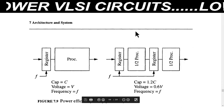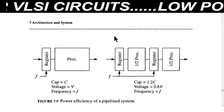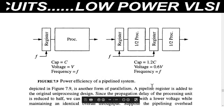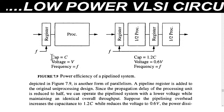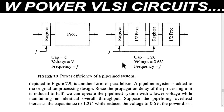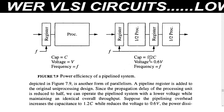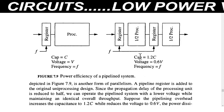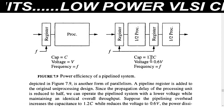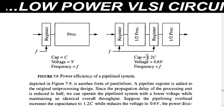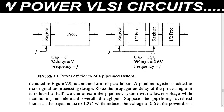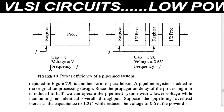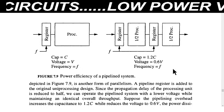By using this pipelining structure we can do parallel processing and the power dissipation will be reduced because the supply voltage is also reduced. Before using pipelining, if the capacitance is C, voltage is V, and frequency is f, then after using pipelining the capacitance will be 1.2C — only 20 percent greater than the previous capacitance. The supply voltage is reduced by 40 percent and the frequency stays the same, but because of this voltage reduction the overall power consumption will be reduced.